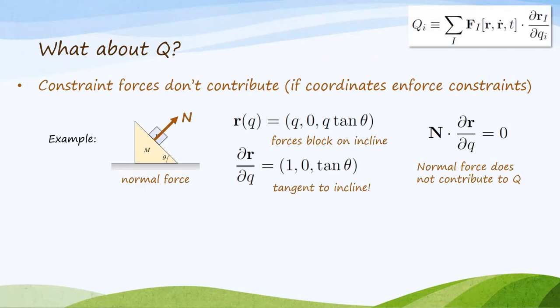An example is the normal force. Here's the classic problem of a block sliding down a ramp. There's gravity pulling down on the block, but it doesn't go straight down because there's a force normal to the surface that keeps it on the surface. Now, in Newtonian mechanics, you have to include this force. But look what happens in Lagrangian mechanics. If we have capital R of q taken to be x equals q, y equals 0, and z equals q tan theta, as shown here, then no matter what q I choose, that block is always sitting on the incline. So by using the single coordinate q, I have enforced the constraint that that block is on the incline.